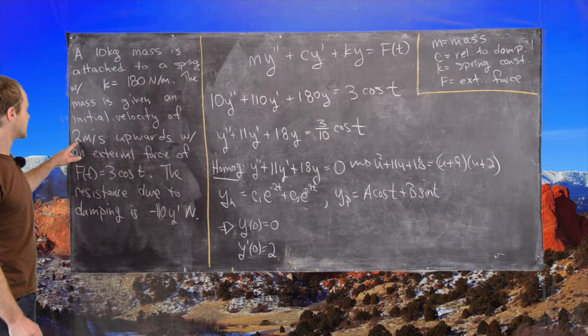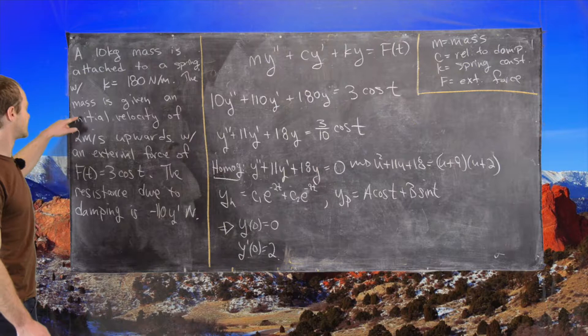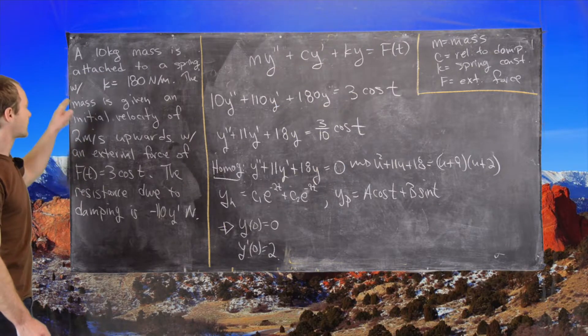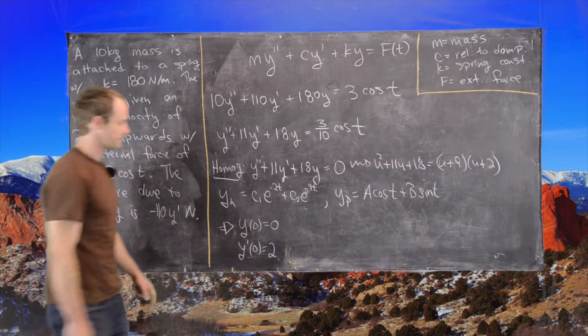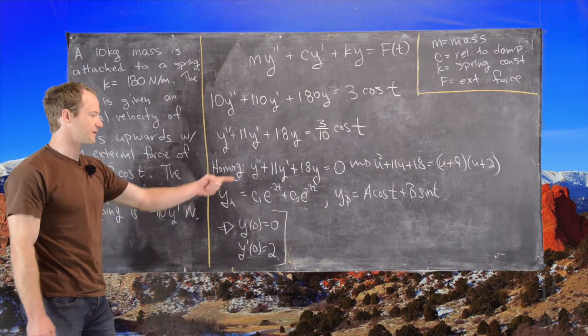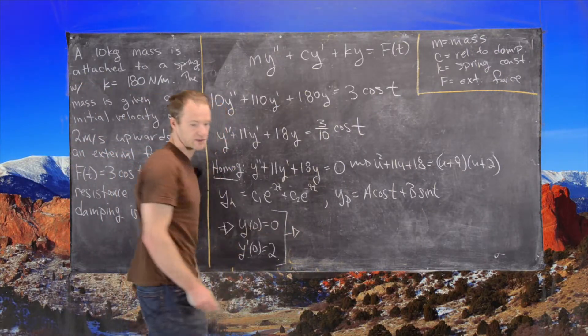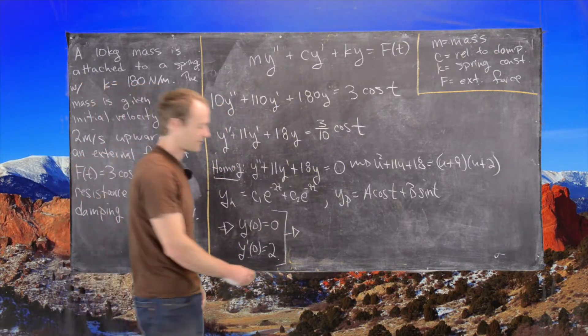So, it's given a 2 meters per second initial velocity and that's from the equilibrium position. So, given these parts, this homogeneous part of the solution, that particular part of the solution, we can solve for all of the constants and we get the following.